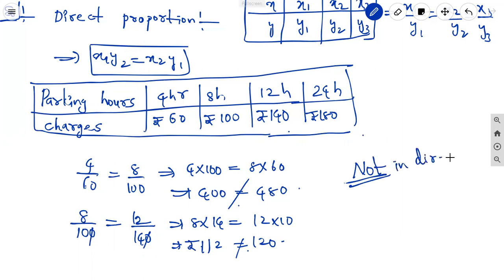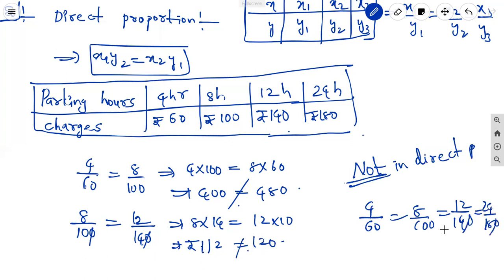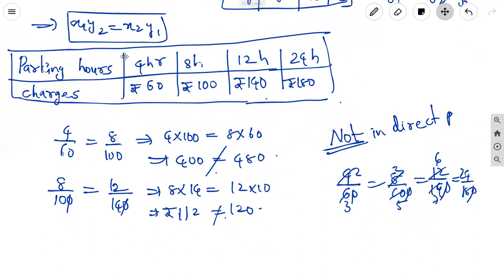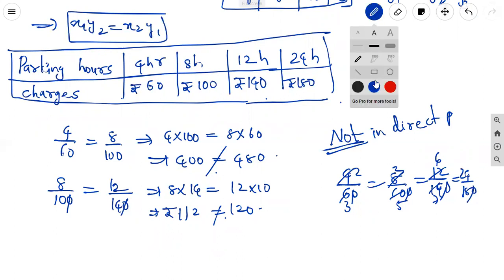We can also verify by simplifying the ratios: 4/60, 8/100, 12/140, 24/180 — these do not all reduce to the same value, so the ratios are not equal. Since the cross-products and the ratios are not consistent, the parking charges are not in direct proportion to the parking time. We can take any two relations: if x1·y2 = x2·y1 they are in direct proportion; otherwise they are not.